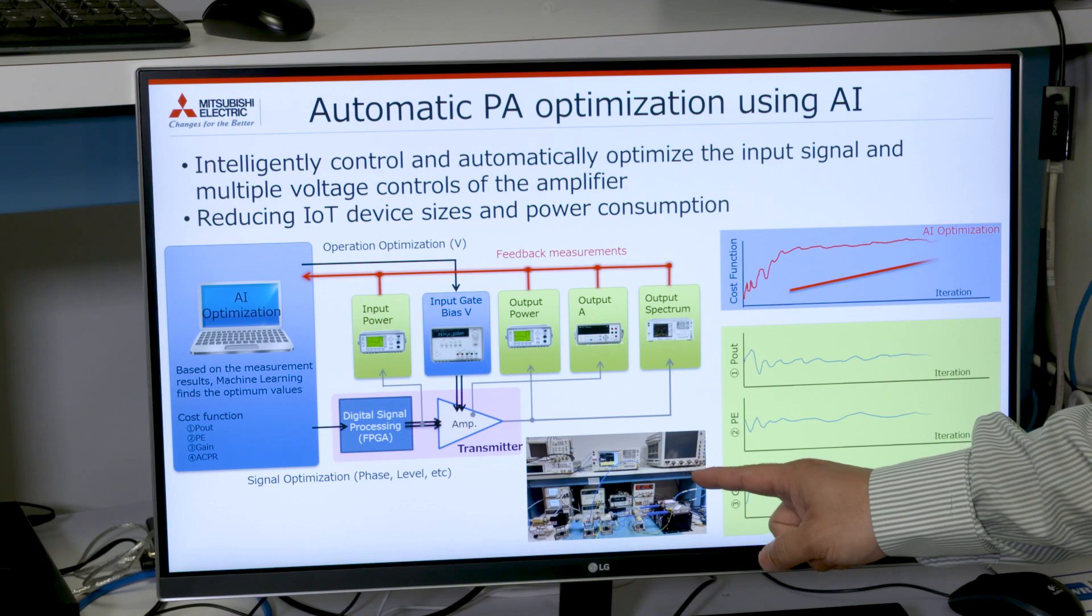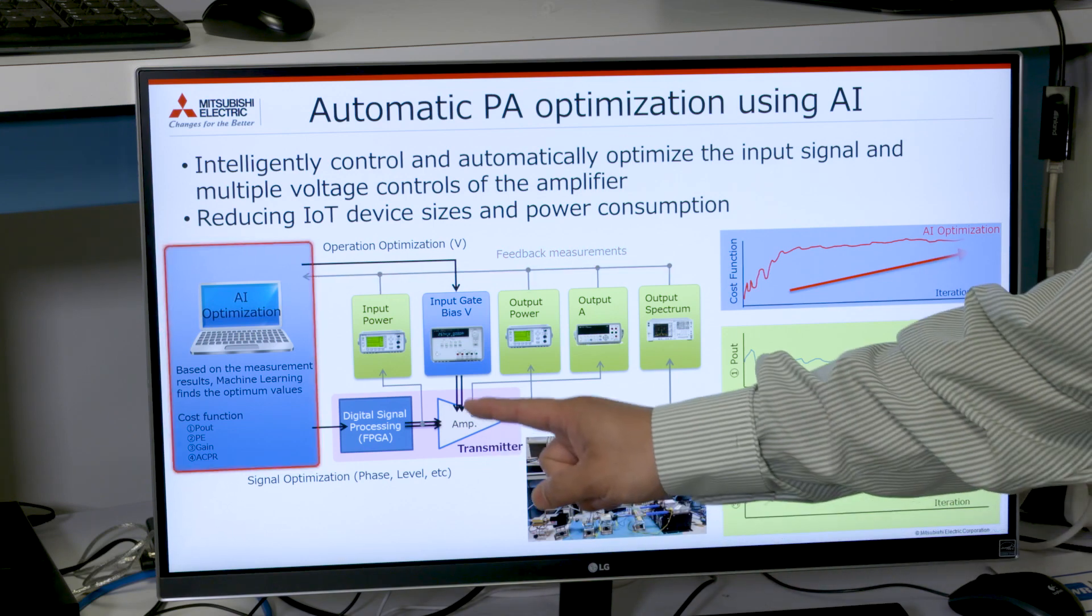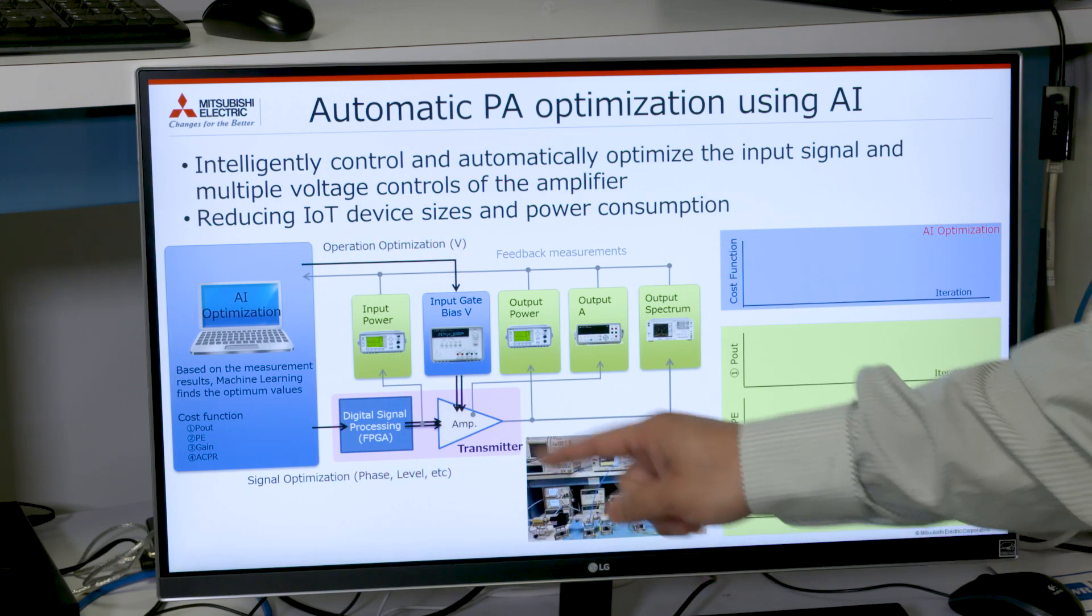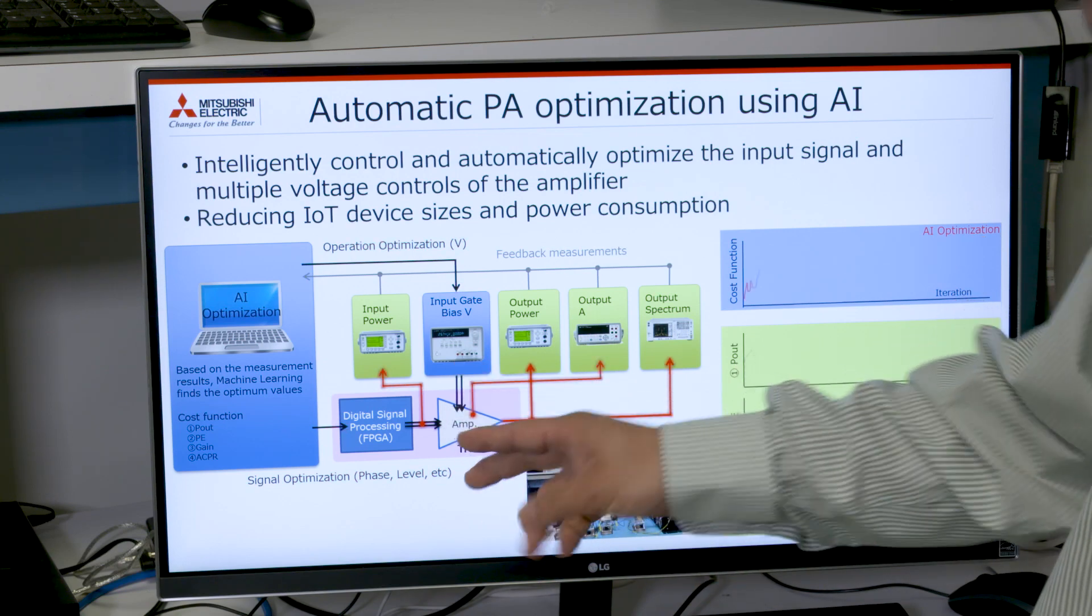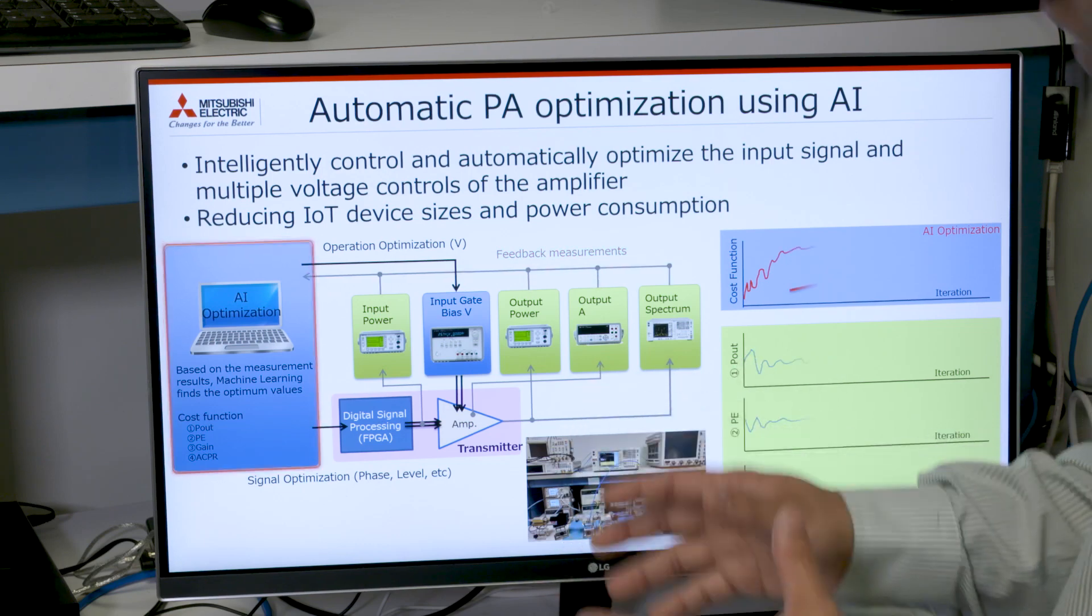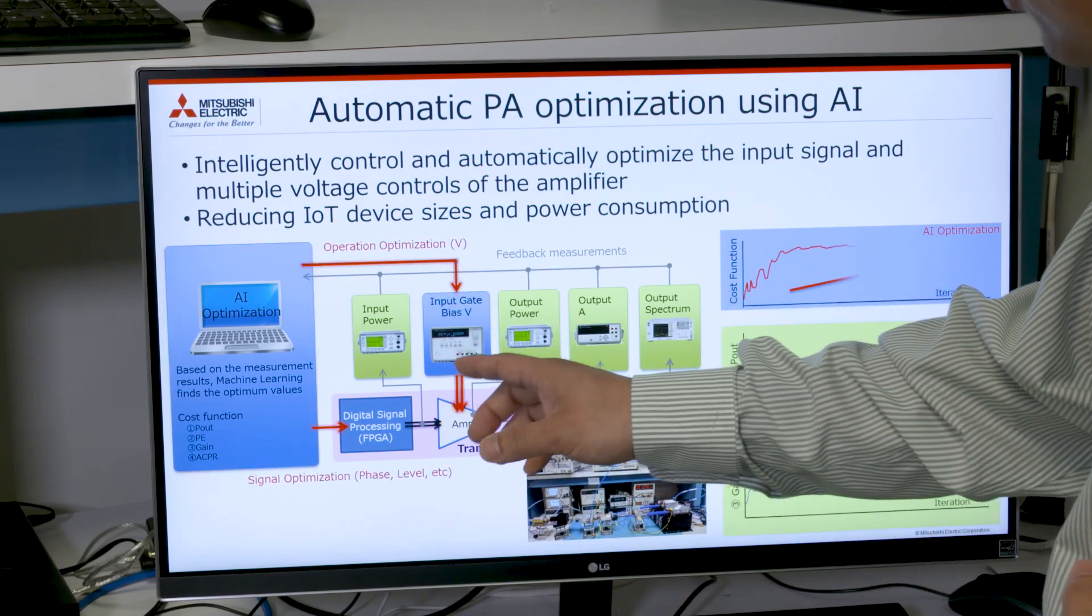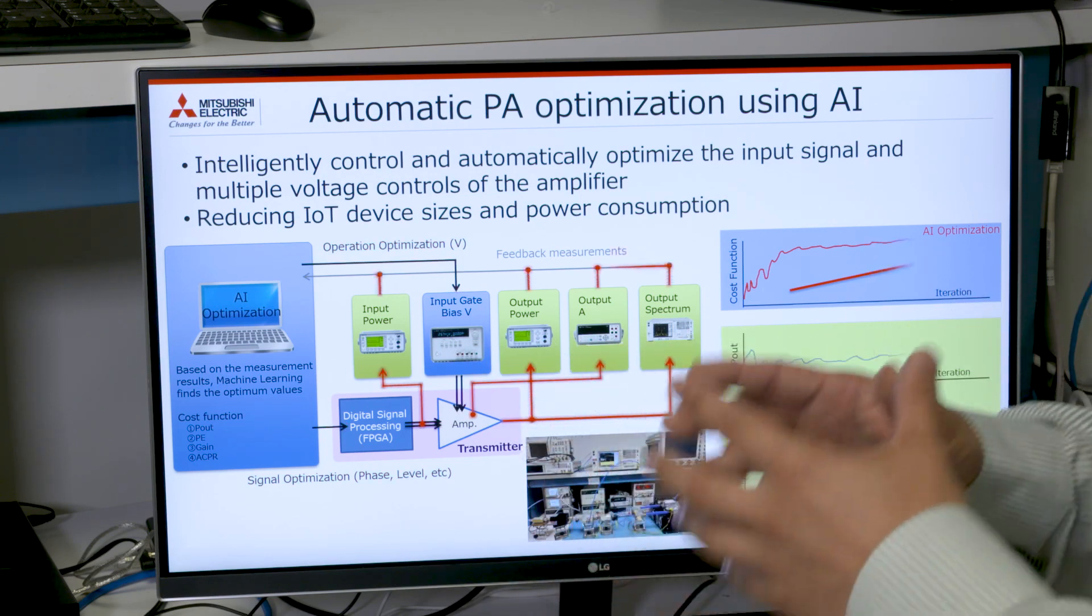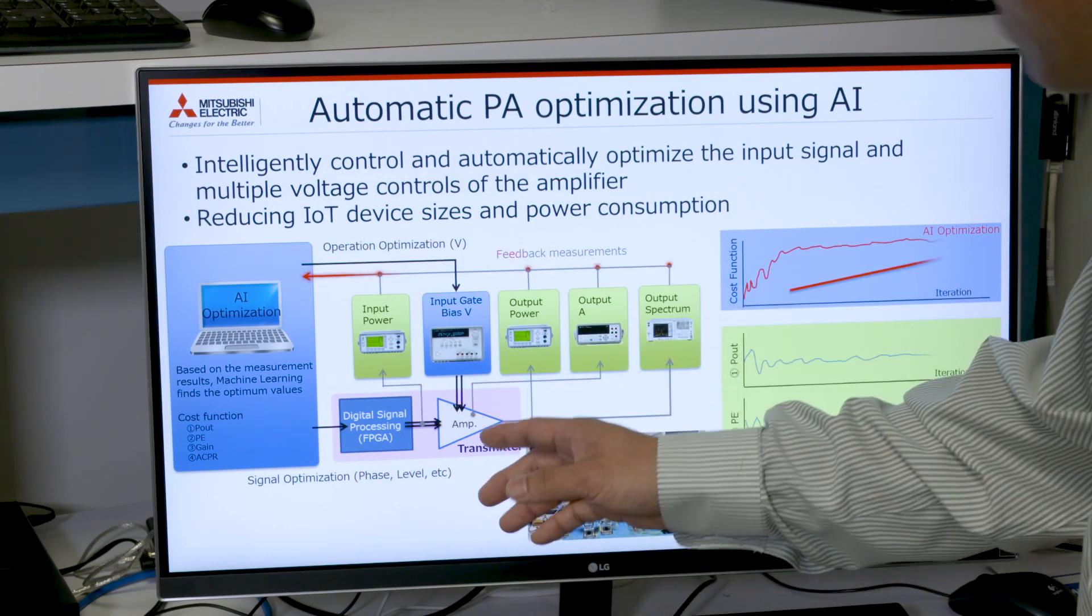Here is a real-time AI platform. We use it to optimize the power amplifier's performance. The AI engine is able to figure out what is the optimum input signal's relative phase and amplitude, as well as to control the input gate bias voltage to figure out what is the best situation to operate this amplifier.